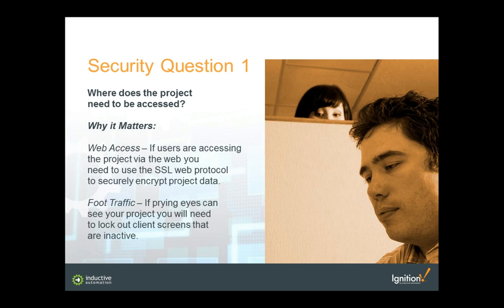Security question number one is: where does the project need to be accessed? First is web access — nowadays a lot of HMI projects want to go on the internet, and you need to make sure you use SSL or some encryption protocol to securely encrypt your data. SSL stands for secure socket layer — it's used to encrypt sensitive data as it travels on the web. If you're using cloud services or port forwarding, you can turn on SSL to guarantee the project is secure.